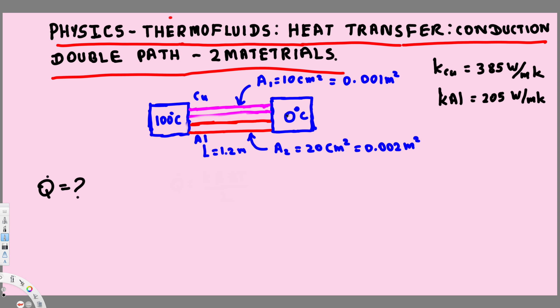The copper bar's cross-sectional area is 10 centimeters square, and the aluminum bar's cross-sectional area is 20 centimeters square. So whenever we have something like this, like in the previous video, we had the same cross-sectional area.